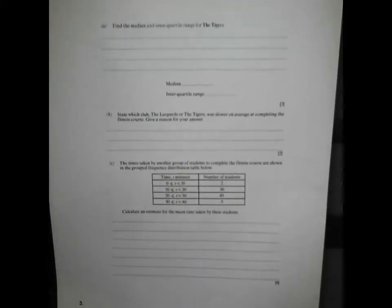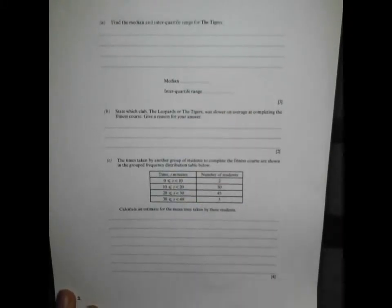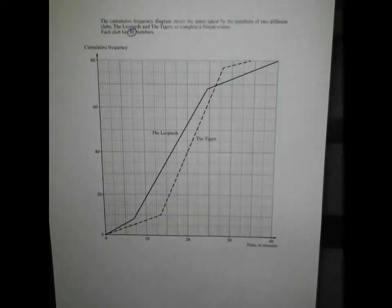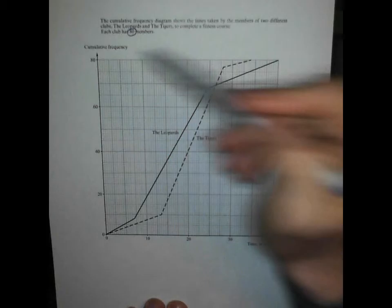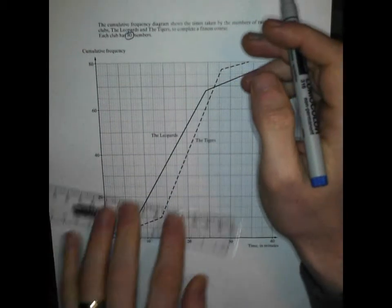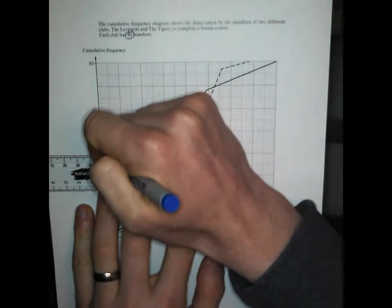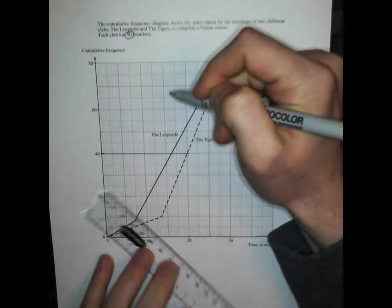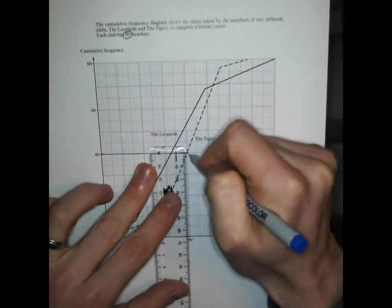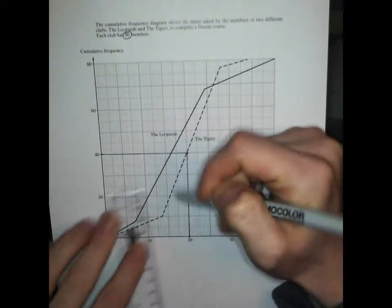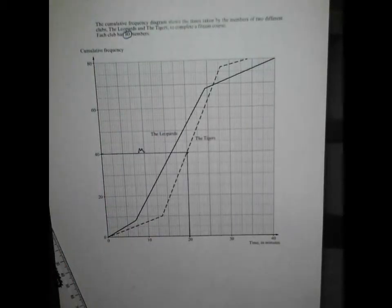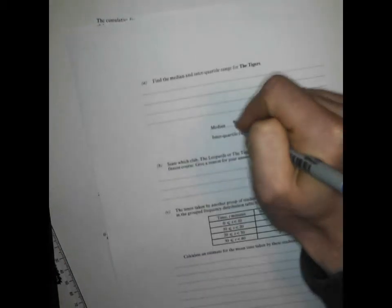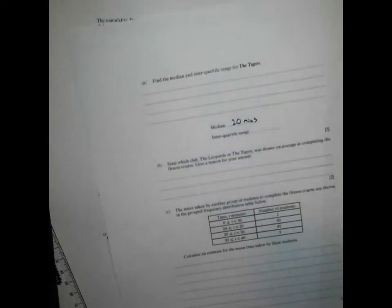Find the median and interquartile range for the Tigers. Don't find the wrong one here. The Tigers are the dashed one. My total cumulative frequency goes up to 80, so for my median I'm going to want to be going across at 40. Let's get a nice line with my ruler here across at 40. Let's see where it hits and go down. They're not going to give you any margin for error here because they've marked it themselves. I'm going to put my M for median, and I reckon that's 20 minutes.